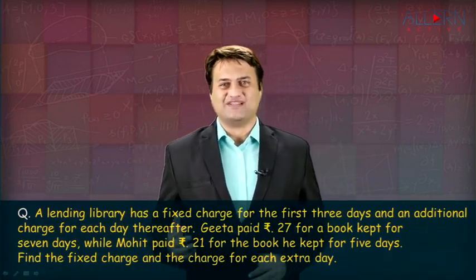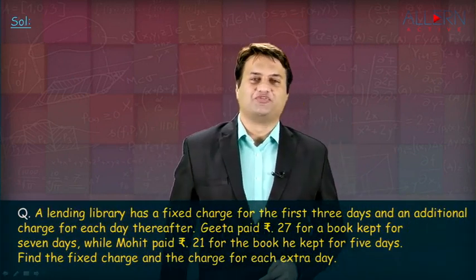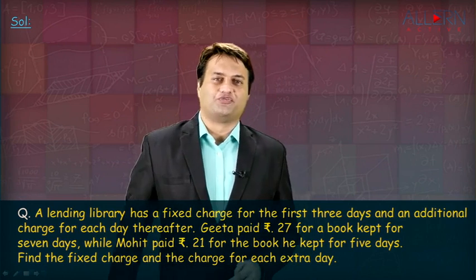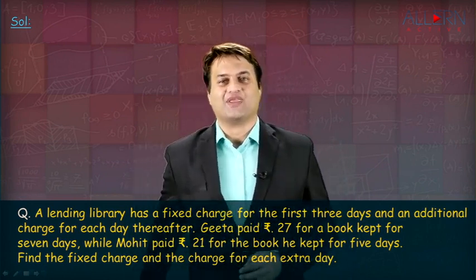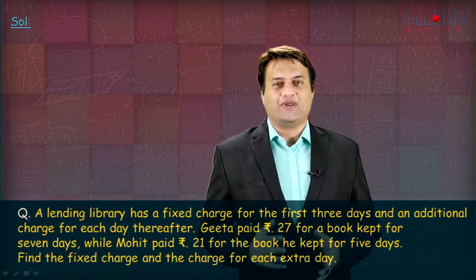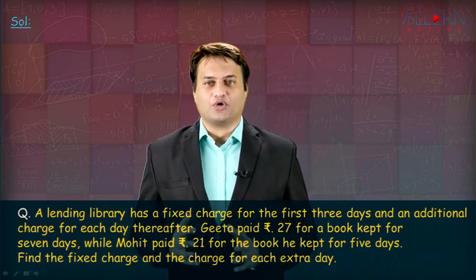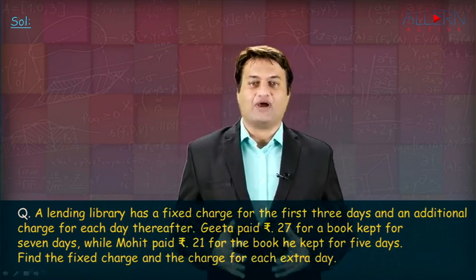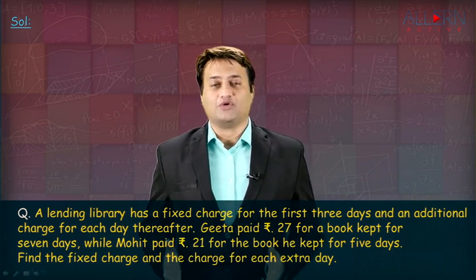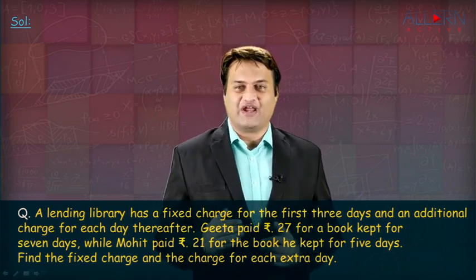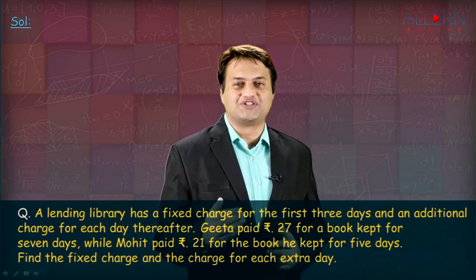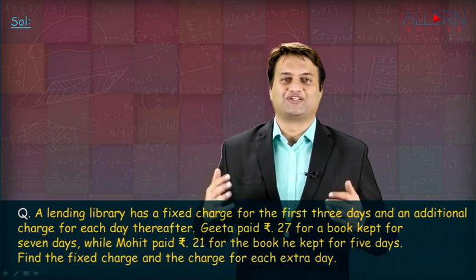Hello students, let us go through one more word problem based on money. The sum is: a lending library has a fixed charge for the first 3 days and an additional charge for each day thereafter. Geeta paid Rs. 27 for a book kept for 7 days, while Mohit paid Rs. 21 for the book he kept for 5 days. Find the fixed charge and the charge for each extra day.